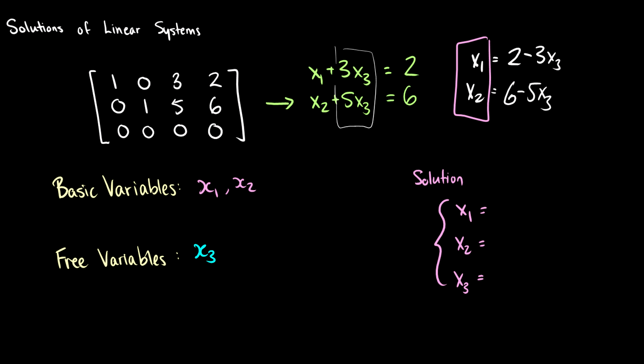So how do we write a solution for this? Well, our solution set, we're always going to write x1, x2, x3, all of our variables will be listed. And in this case, x1 is going to be 2 minus 3x3, x2 is going to be 6 minus 5x3, but x3, we're going to write x3 is free.